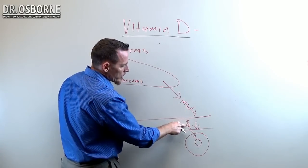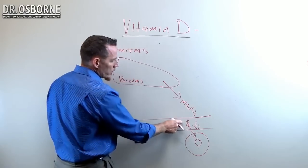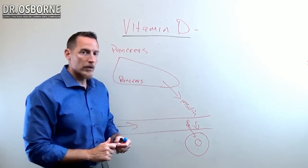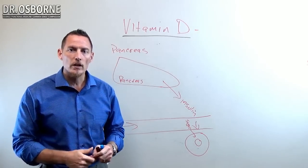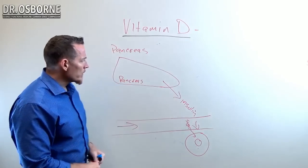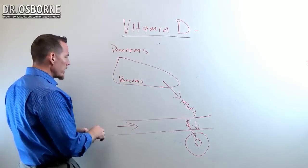If that sugar can't leave your blood, then your blood sugar goes up. That's what creates an increase in blood viscosity, glycation, and a number of different diseases. The pancreas produces that insulin, but how does it produce that insulin?